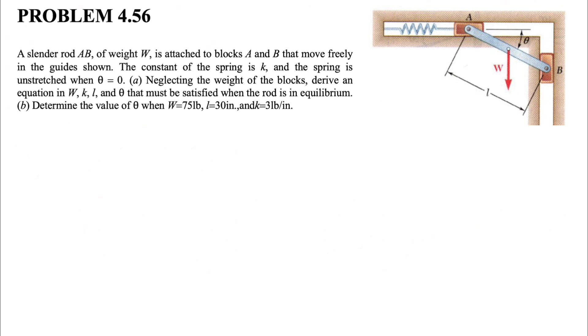In part B, we need to determine the value of theta when the weight is 75 pounds and the length of the rod is 30 inches. We also know the spring constant K is 3 pounds per inch.